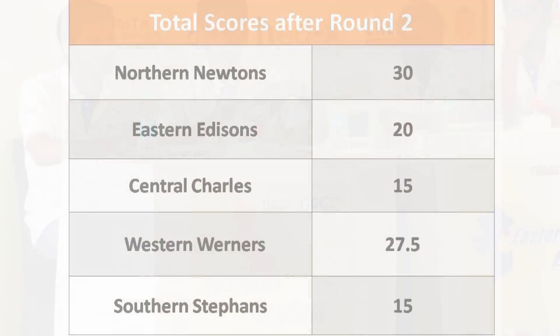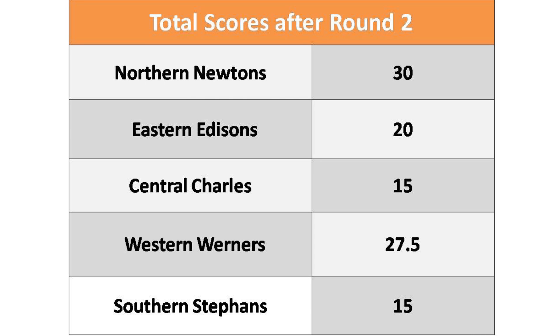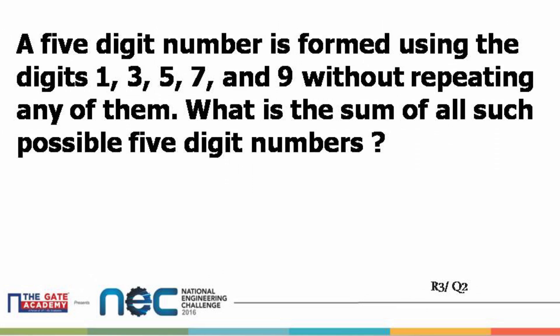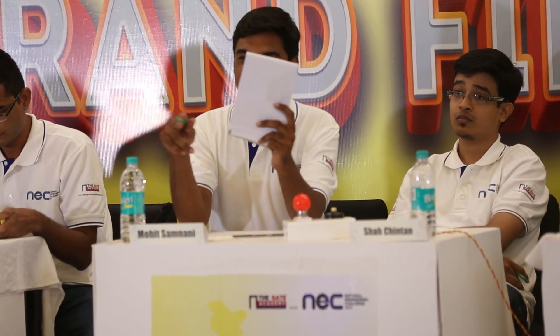Here's the scoreboard — Round Number Three, Hot Shots. Here comes your first question. Pass to Western Learners: it's five times six, double zero — six six six six double zero. That's correct!